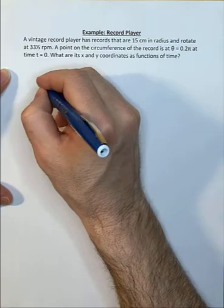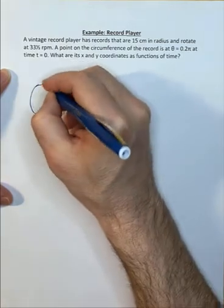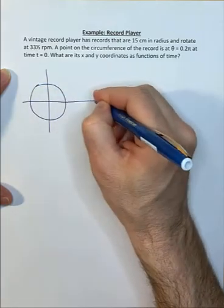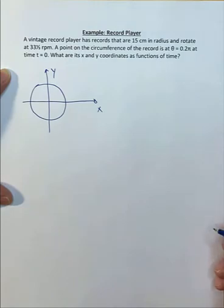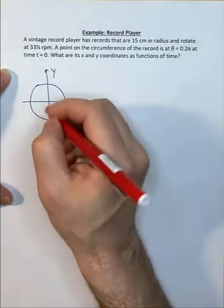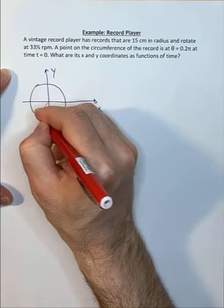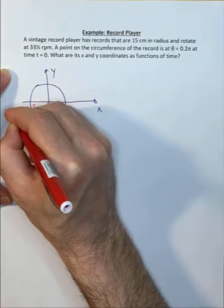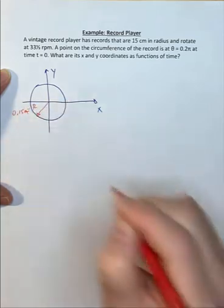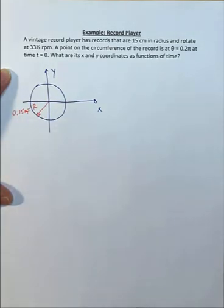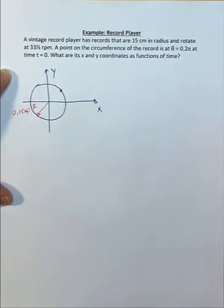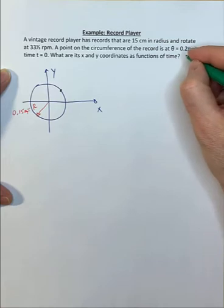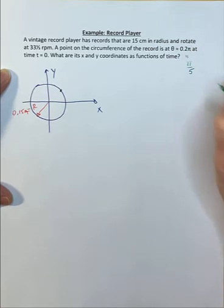Let's start by making a drawing. Here's our turntable, and let's draw our x and y axes here. We know that the radius of our records is 15 centimeters, so 0.15 meters. We have a point here that's at an angle of 0.2π. I prefer to write this as π over 5 at t equals zero.